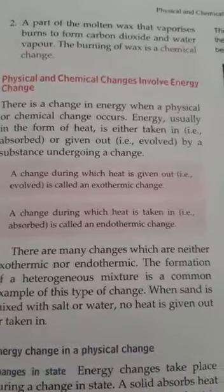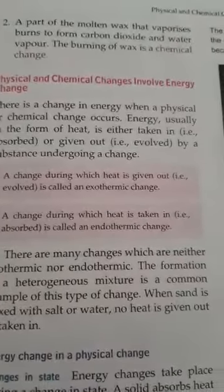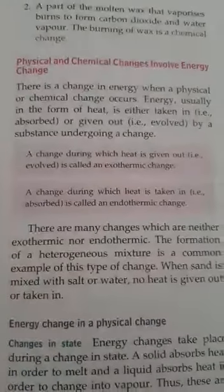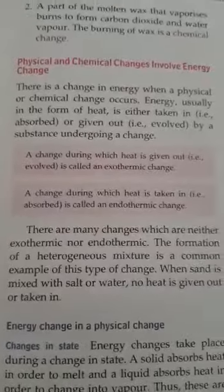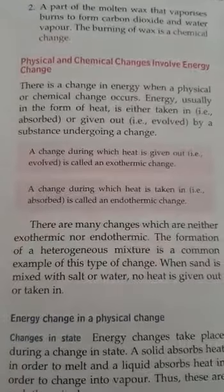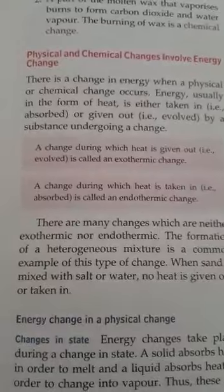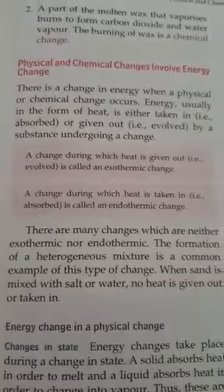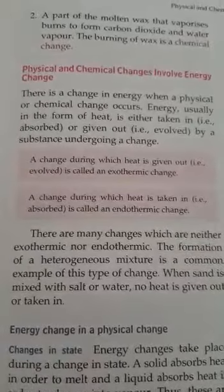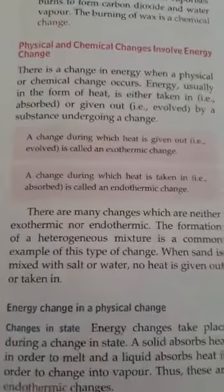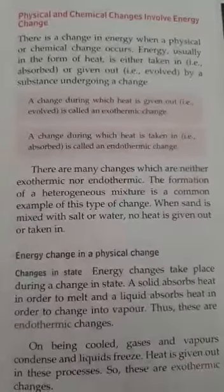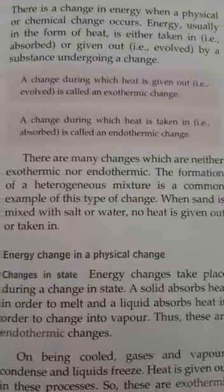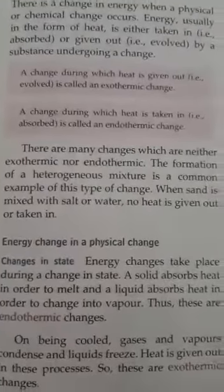So, burning of wax is an example of both physical change and chemical change occurring together. Next, the energy change involved in a physical and chemical change. There is a change in energy when a physical or chemical change occurs. Energy, usually in the form of heat, is either absorbed or evolved by a substance undergoing a change. A change during which heat is given out or evolved is called exothermic change. A change during which heat is taken in or absorbed is called endothermic change.